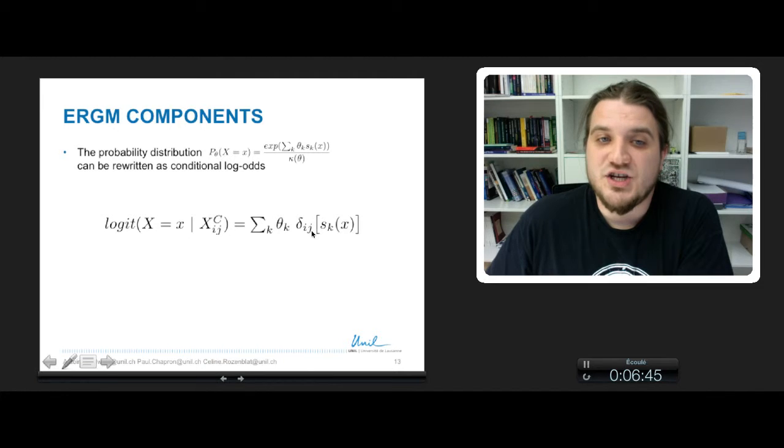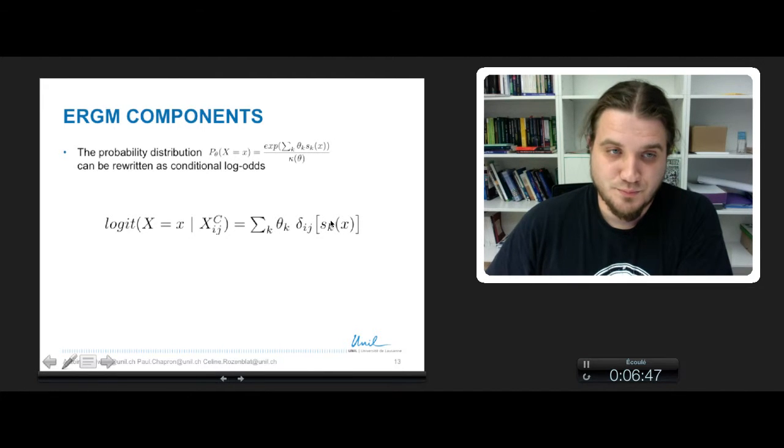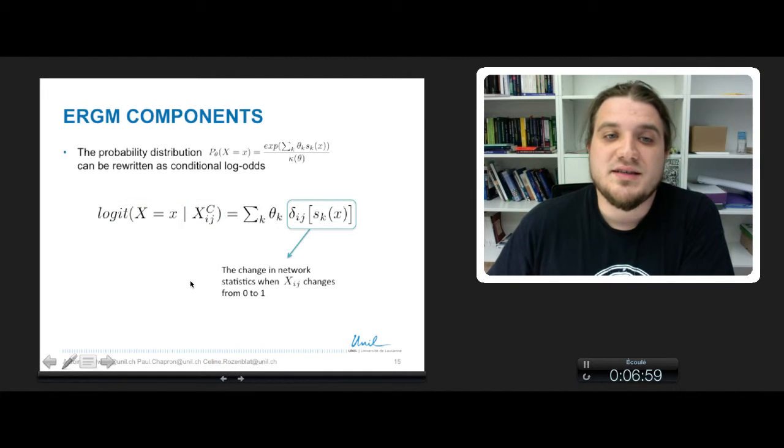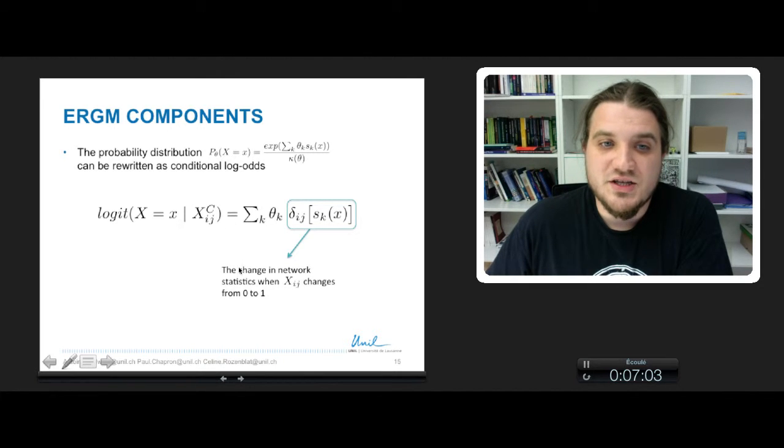So this is the log odds of seeing the edge i and j to exist given the rest of the network. And this part is the change in the network statistics when you change the existence of the link between i and j.